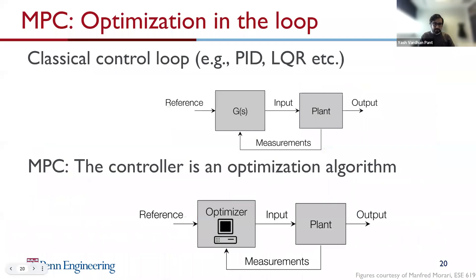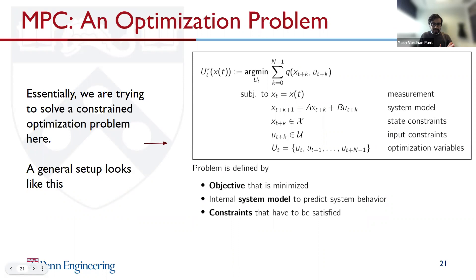MPC can be thought of as an optimization algorithm in your closed loop that computes your control input, as opposed to classical control like PID or a linear quadratic regulator, which is a fixed mathematical function. MPC takes in the reference and the measurement, has a model of your plant — just like Senna thinking about turbocharger lag — and instead of computing a control input that is just optimal now, it computes an input that is going to be optimal over some time horizon, looking at a moving time window to optimize over.